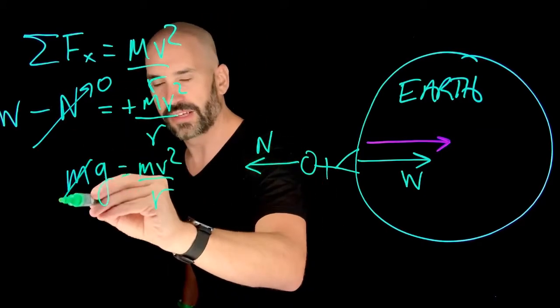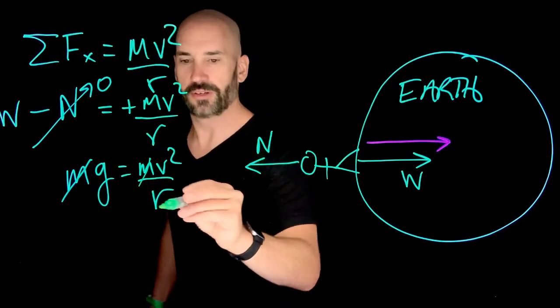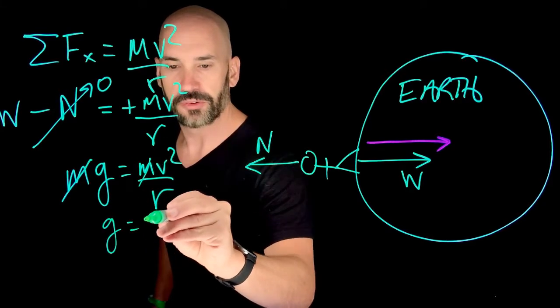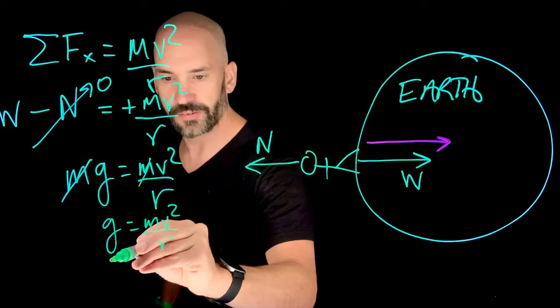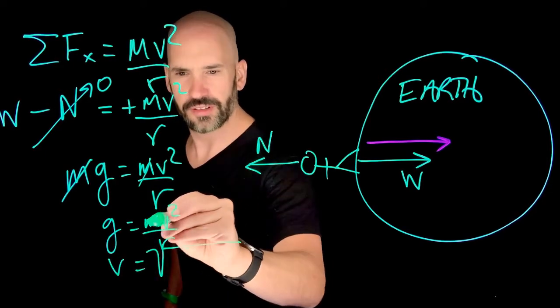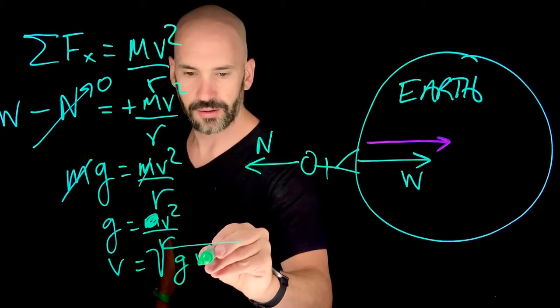Well, this is a beautiful thing. This is so satisfying when this happens, when I get to cross out my m's. So I'm crossing out my m's here. And so I get g is equal to v squared over r. If I solve for v, I get v equals square root of, actually, this is gone. I get the square root of gr.